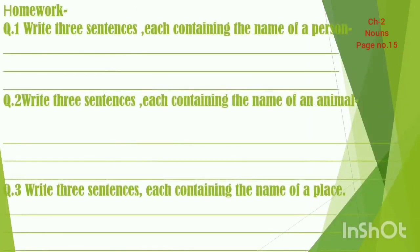Let's see the homework now. Question one: write three sentences, each containing the name of a person. Teen sentences likhane hain jis mein kisi person ka naam aata ho. For example, you can write: 'My name is Shweta,' or 'My mother is very beautiful.' Teen logon ke naam us sentence mein aane chahiye.